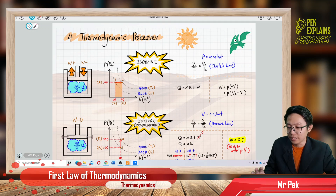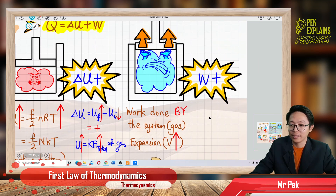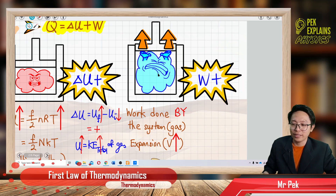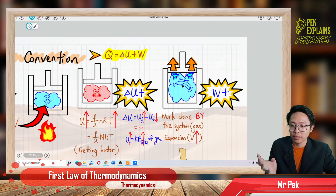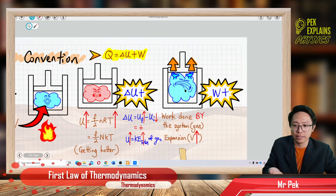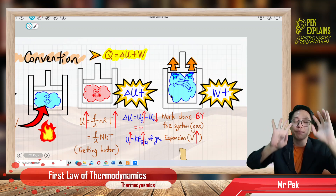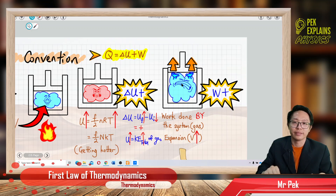Looking at the diagram: the gas is pushing up the piston — expansion, volume increases. So the gas does work. When the gas does work, it loses energy — specifically its own internal energy — to push the piston up. There is nobody else inside the cylinder except the gas, so it is the gas that does work by pushing up the piston. When it uses up its own internal energy to do work, its internal energy decreases.